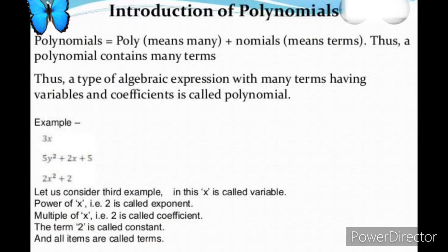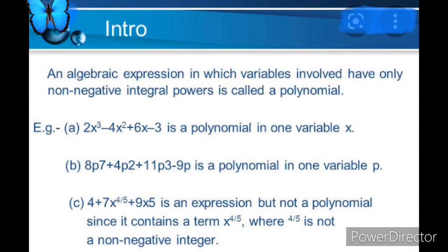See the introduction, polynomials. Poly means many, nomials means terms. Thus a polynomial contains many terms. You can see the examples here. Let us consider that x is called variable, that is 2 is called exponents and 2 coefficient also.